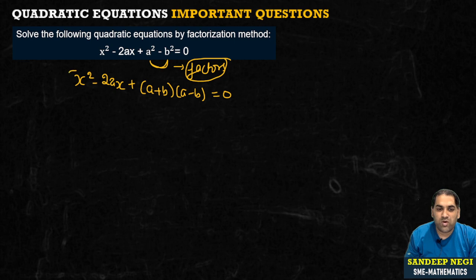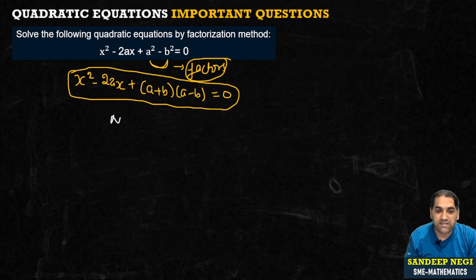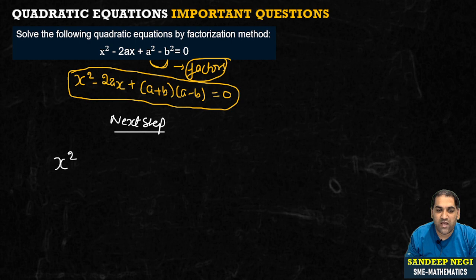This is our first equation. We have converted it into factorization form. Now, for the next step, the upper part remains as it is, which is minus, and there is only 1 by 2.